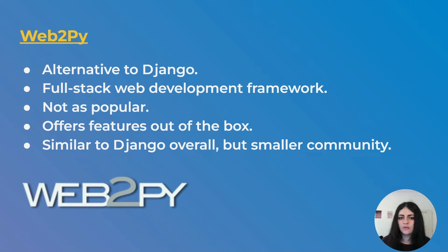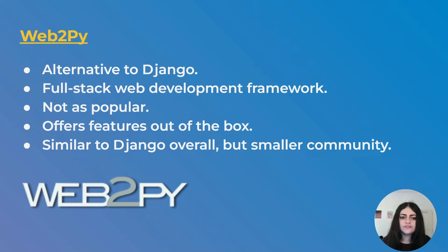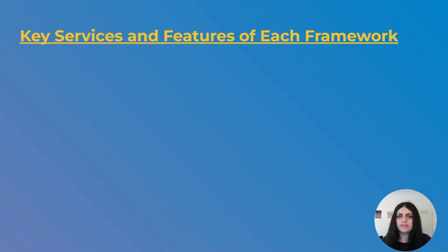The final framework of the big five is Web2Py. As the name suggests, it's a full stack web development framework — an alternative to Django — meaning you can write everything from client-side to server-side. It offers features out of the box just like Django and is similar to it overall. However, it's not as popular, the community is much smaller, and it's not as advanced as Django, though it does provide alternatives to many of Django's built-in functionalities.